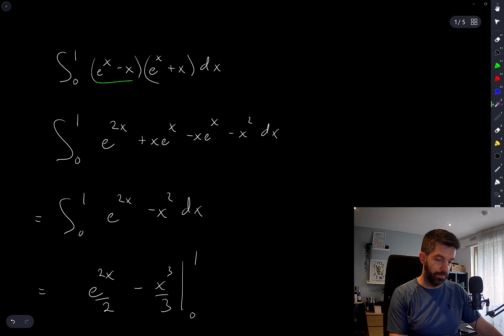I have something minus something and something plus something, where the somethings are the same: (a - b)(a + b). And so I end up with a^2 - b^2.